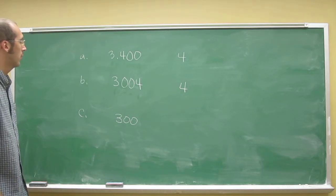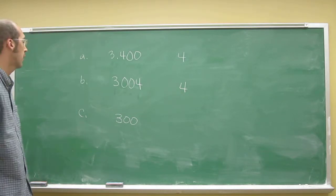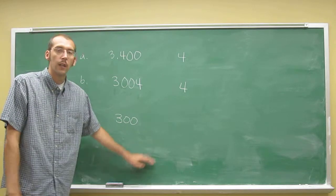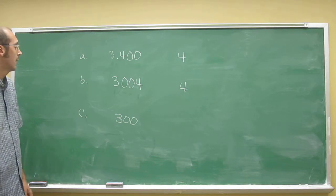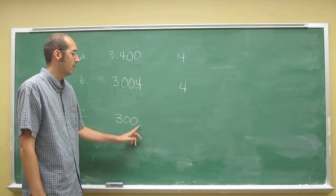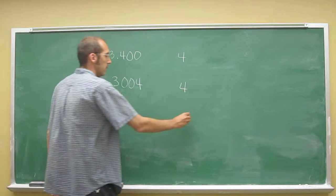And then remember the rules with trailing zeros. So this number 300 here actually only has one significant digit. Why? Because there's no decimal point in this, so we'll put one, right?